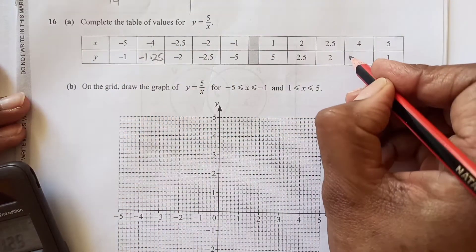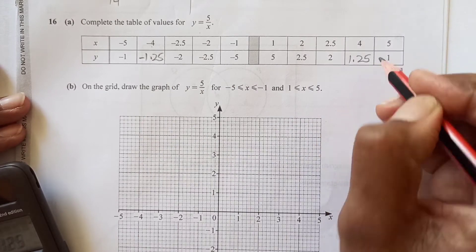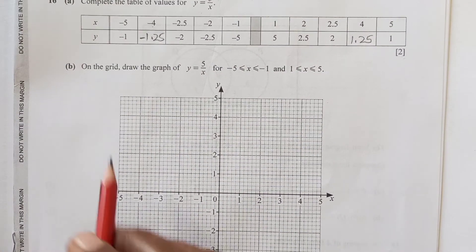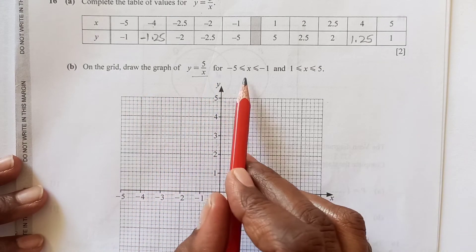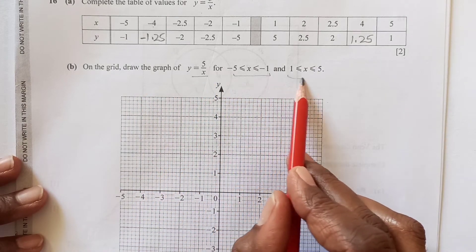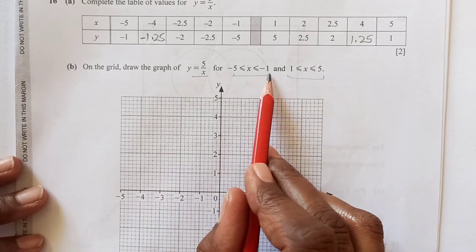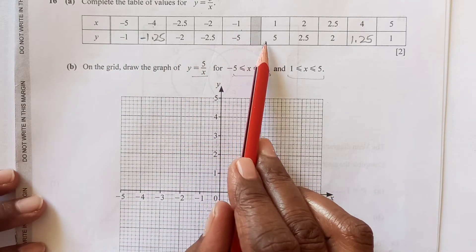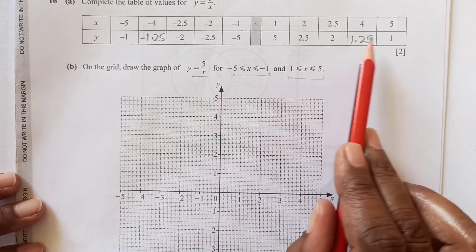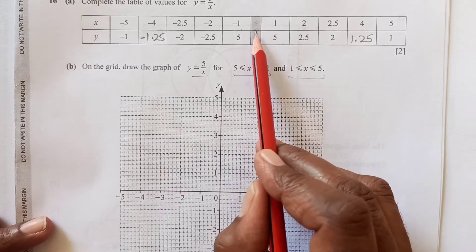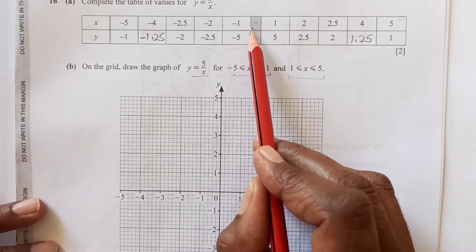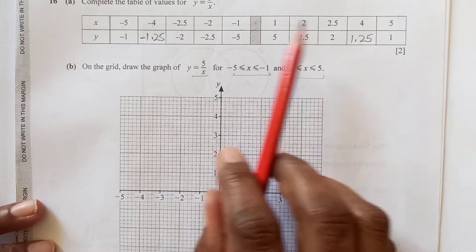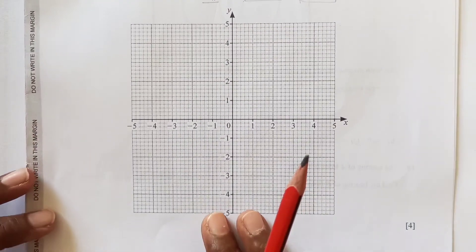For x = 4, y = 5/4 = 1.25 with a positive sign. Now on the grid, draw the graph for the given values. The x range goes from −5 to −1 for the first section, then there is a gap, then 1 to 5. That means we will get two separate parts of the graph which are not joined together.